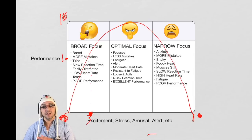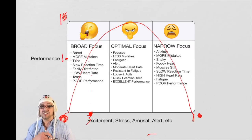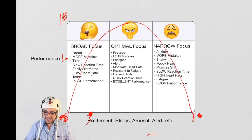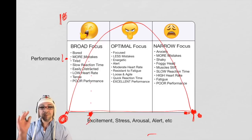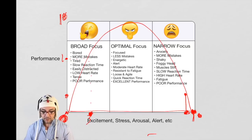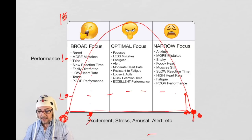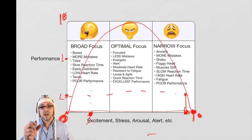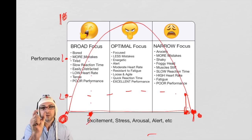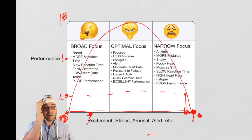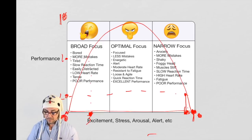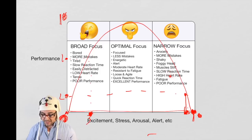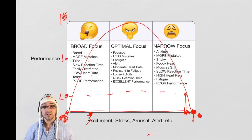Now let's look at the opposite end — narrow focus. Let's say we're over-stressed, over-anxious, so angry because we keep losing — we're at a nine or ten arousal. At ten the performance intersects at zero; at nine, maybe a two in performance. Narrow focus is like looking through a toilet paper cardboard tube — that's all you can see, like a horse with blinders on. No peripheral vision. Anxiety, more mistakes, shaky, foggy head, stiff muscles, slow reaction time, high heart rate, fatigue, poor performance.